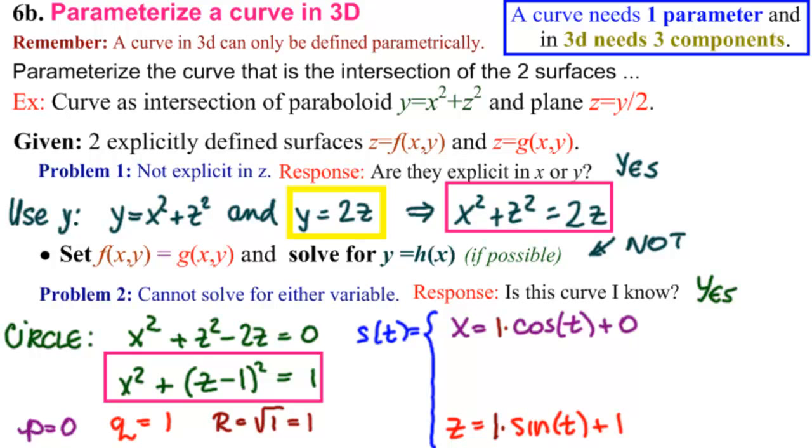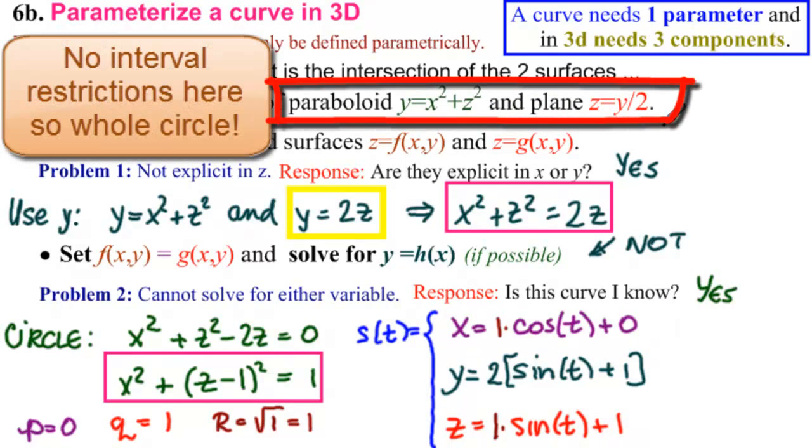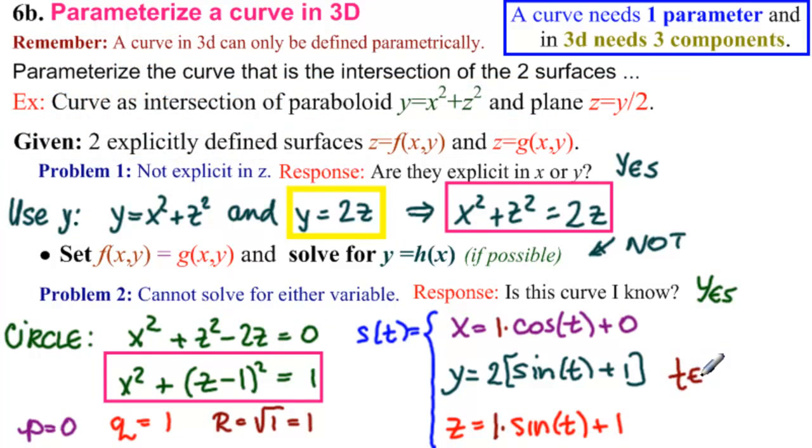So those are the first two things. Now we look for the one that we took out in the beginning, which is y. We find our easiest equation, which is this one right here, y equals 2z. And we say y equals 2 times z. z is sine of t plus 1. And in fact, we are completely done because we were not given any other restrictions here. We must have the whole circle. So in fact, we have been given the interval from 0 to 2 pi.